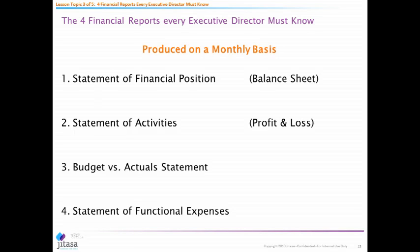The focus of today is: what are the reports that every executive director must know and understand? One thing that's unique about the nonprofit sector is the terminology we use is different than the for-profit sector, which can create confusion with board members. Key reports include the statement of financial position, the statement of activities, budget versus actuals, and the statement of functional expenses — breaking expenses down by program, admin, and fundraising. These four are an absolute minimum of what you want to look at on a monthly basis.